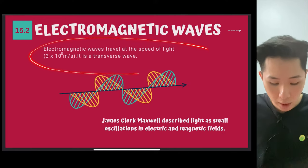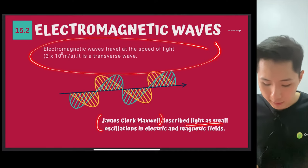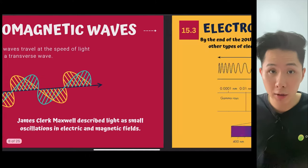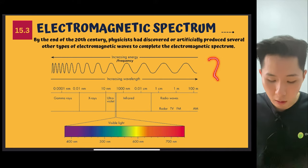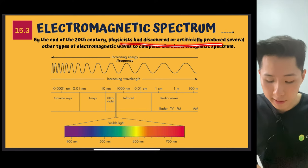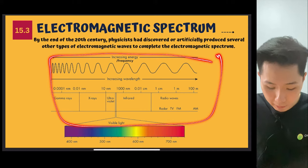So let's look into what exactly is electromagnetic wave. It is a transverse wave, and the scientist James Clerk Maxwell described light as a small oscillation in electric and also magnetic field. And I want to show you this picture called electromagnetic spectrum. And by the end of 20th century, physicists had discovered or artificially produced several other types of electromagnetic wave to complete this thing called electromagnetic spectrum.